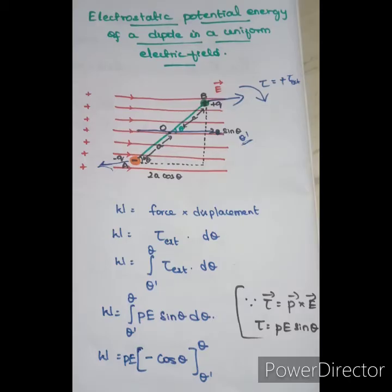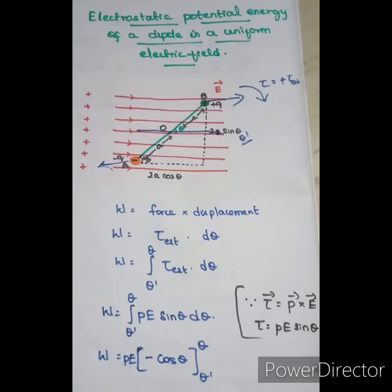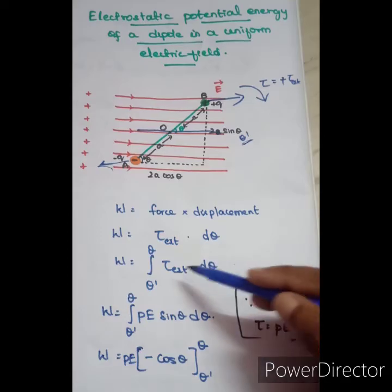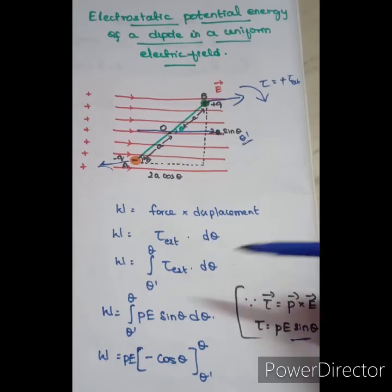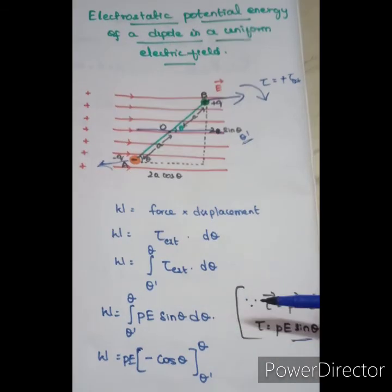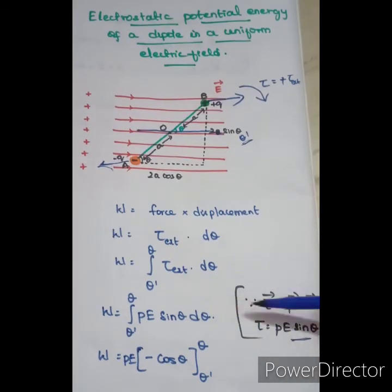Now, the torque vector is equal to P vector cross E vector. That's the derivation from the torque experienced by an electric dipole in a uniform electric field. So tau vector equals P vector cross E vector. The magnitude is PE sin theta. We substitute this value for tau-external: work done equals integral from theta-dash to theta of PE sin theta d-theta.